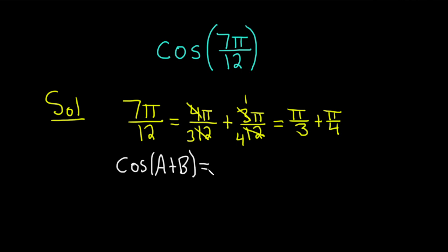this is equal to the cosine of a times the cosine of b. And then the trick is you flip the sine. So minus sine a sine b.